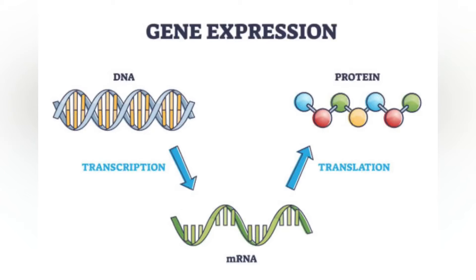In the inverse process of deadenylation, poly-A tails are shortened by the CCR4-NOT exonuclease complex, which often leads to full transcript decay.